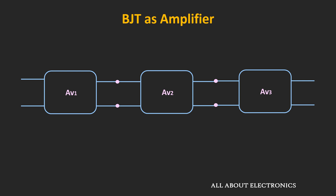To increase the gain, when multiple amplifiers are cascaded together, it is known as multistage amplifiers. Apart from that, for impedance matching on the input or output side, we also need to use multistage amplifiers.